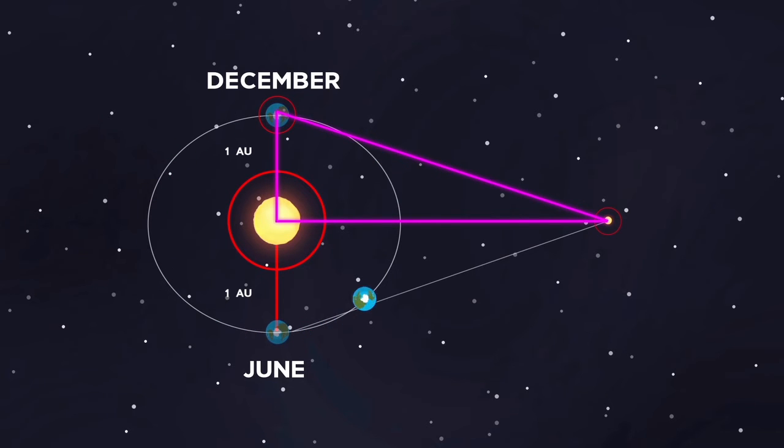Using trigonometry, the triangle is solved to determine the distance to the star. The angular shift, parallax, is one angle of a triangle, and the distance between the two vantage points, the baseline, is one side of the triangle.